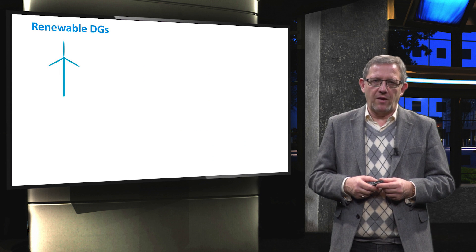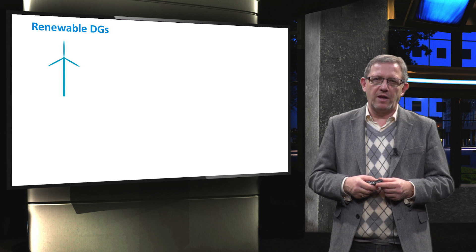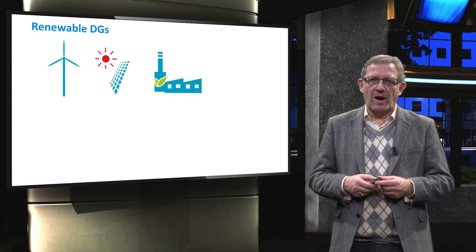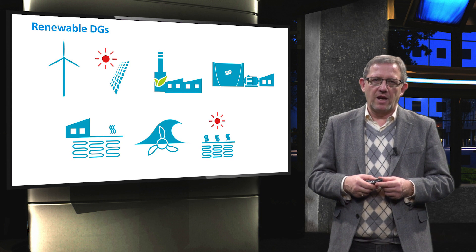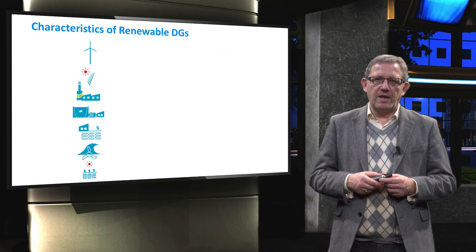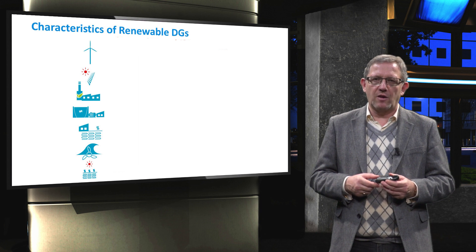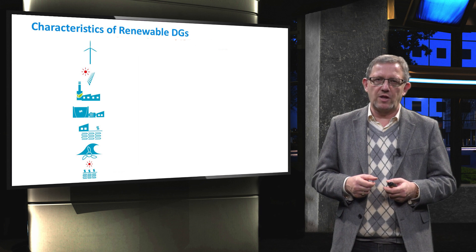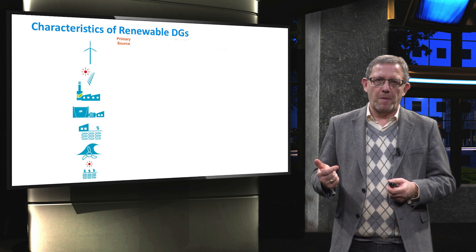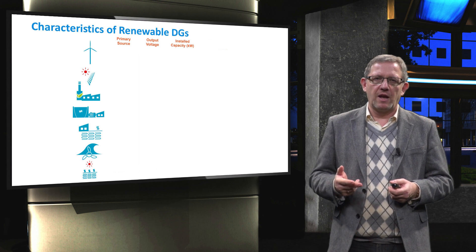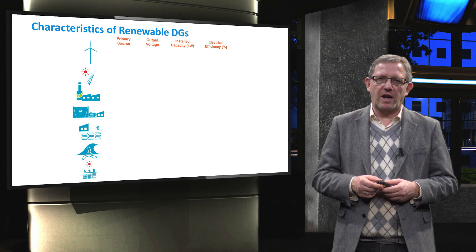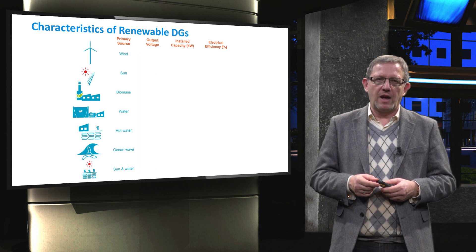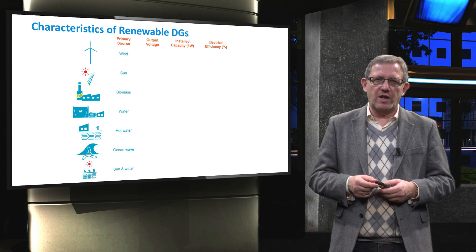On the other side, a microgrid can have distributed generators based on renewable energy sources, namely wind generators, solar photovoltaics, biomass power plants, hydro units, geothermal, ocean energy, and solar thermal plants. In this slide, we review the main characteristics of these renewable-based generators in terms of primary source, output voltage, installed capacity, and electrical efficiency. Note that geothermal and solar thermal plants use hot water to generate electricity.